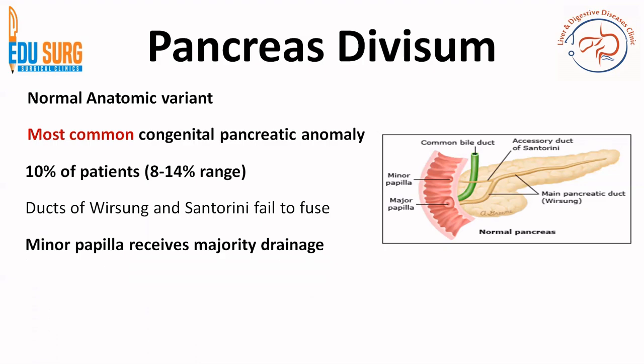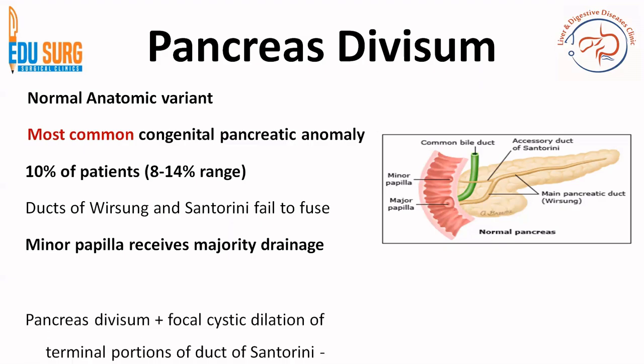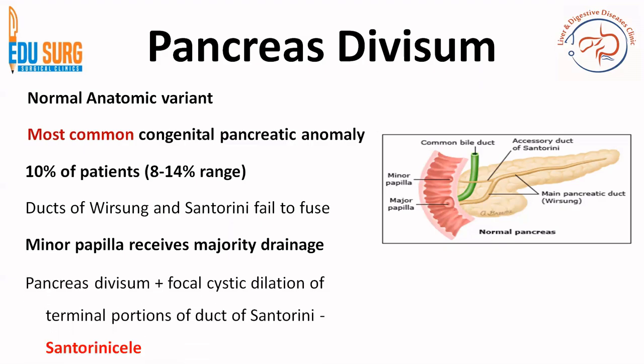In pancreas divisum, the ducts of the two buds don't fuse. It is a normal anatomic variant and is the most common congenital pancreatic anomaly, with an incidence of approximately 10 percent. In pancreas divisum, the minor papilla receives the majority of drainage through the dorsal duct.